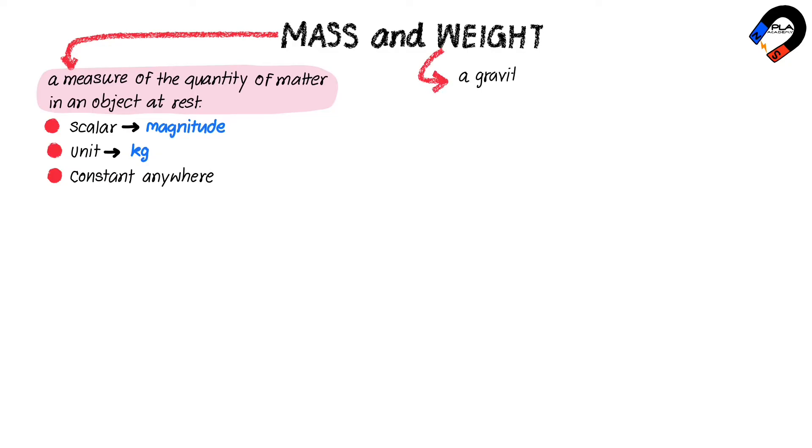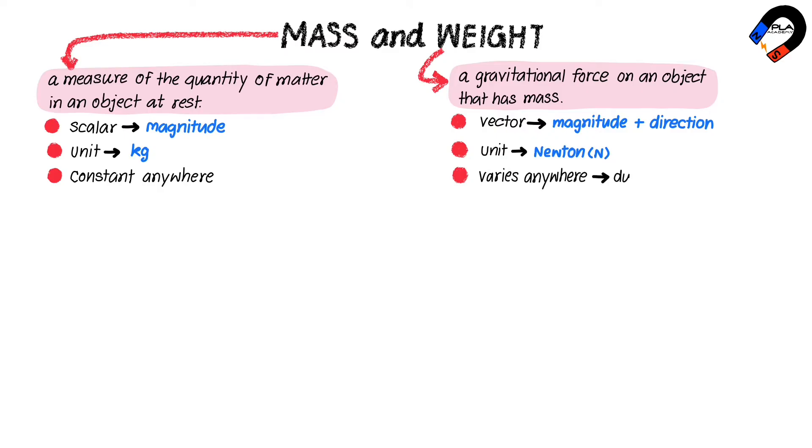Weight is a gravitational force on an object that has mass. Weight is a vector quantity which has magnitude and direction. Its unit is Newton. Weight varies anywhere in the universe due to the gravitational field strength.